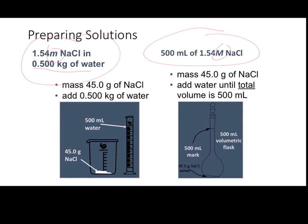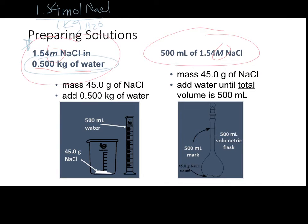Let's pay attention first to our 1.54 molal solution. The molality of our solution is 1.54 molal, meaning we have 1.54 moles of our solute, NaCl, for every one kilogram of our solvent, water. For one kilogram we have 1.54 moles of NaCl, but they've asked us to create a solution that utilizes a half a kilogram of water. We need to find out how many moles of NaCl need to be dissolved to keep that concentration consistent with the smaller quantity.